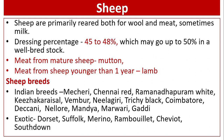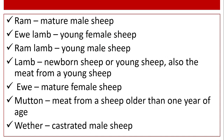Sheep are primarily reared for both wool and meat, sometimes for milk. Dressing percentage is usually 45 to 48 percent, which may go up to 50 percent in well-bred stock. Meat from mature sheep is known as mutton; meat from sheep younger than one year is known as lamb. Ram means mature male sheep; ewe means mature female sheep. Young female sheep is known as ewe lamb; young male sheep is known as ram lamb.